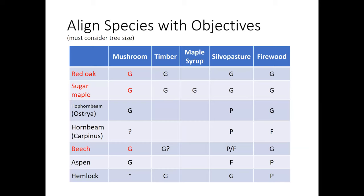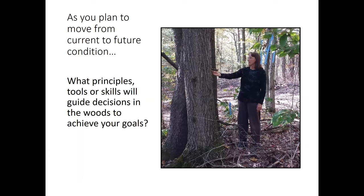Some species like aspen may be really good for mushroom production but poor for firewood. Other species like sugar maple, red oak, and American beech tend to be pretty good across the board. You have to play to your strengths — look at what you have growing and think about how those species will fit your objectives. As you think about current conditions and desired future outcomes, you're going to need a toolbox of principles, skills, and decision-making tools — what foresters call silviculture.